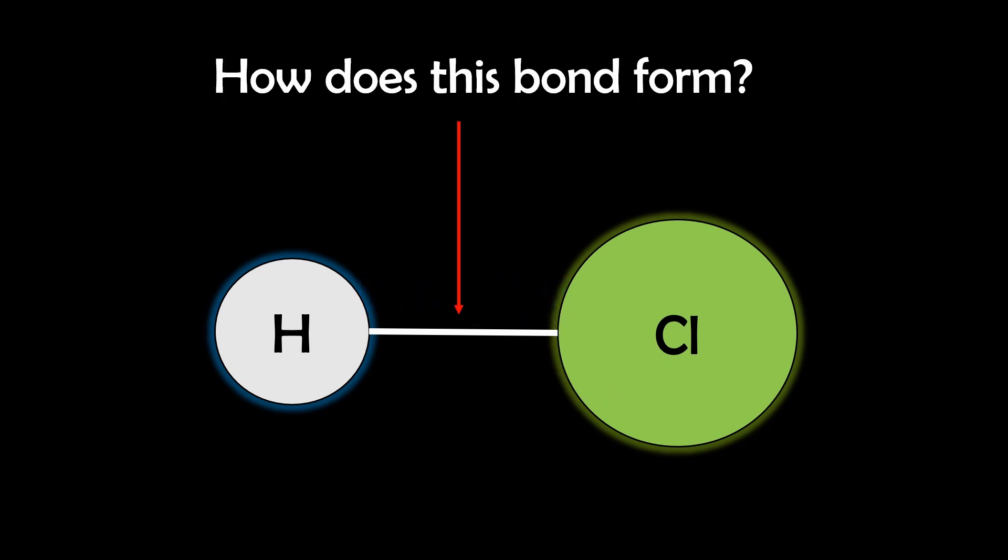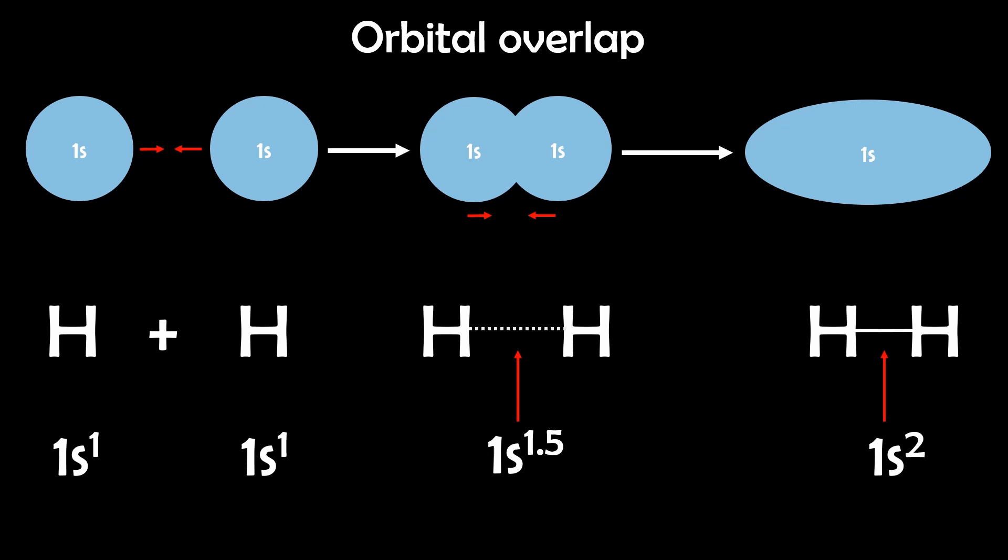But this raises an important question. How exactly do atoms come together to form these bonds? The short answer is when atoms approach each other, their atomic orbitals can overlap if the conditions are energetically and symmetrically favorable.